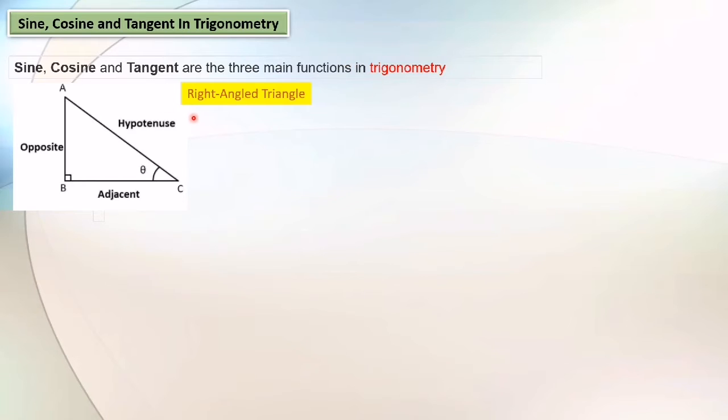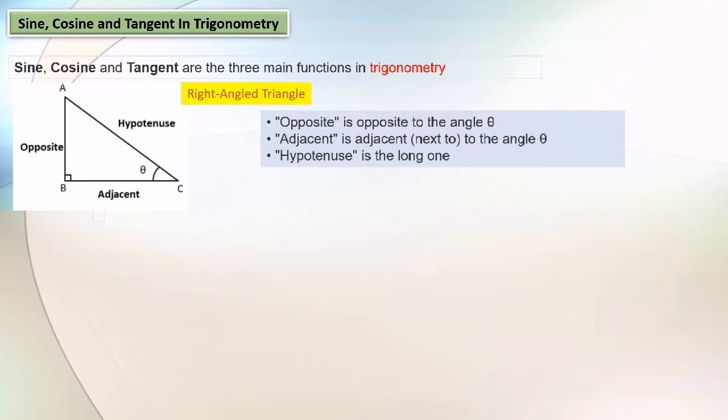This is a right-angled triangle. Opposite is opposite to the angle, so this is the angle theta and this is the opposite side. Adjacent is adjacent, next to the angle theta, so this is adjacent. And hypotenuse is the long one, so it's this side.